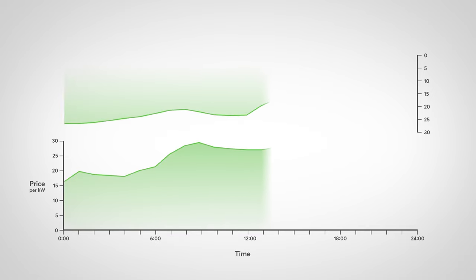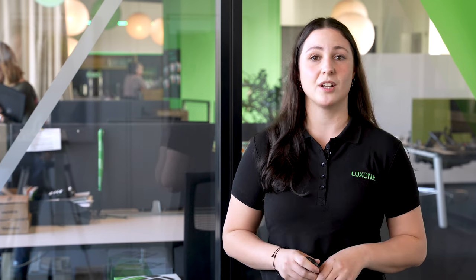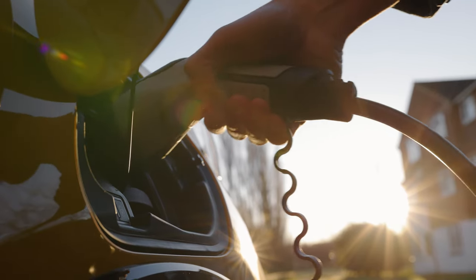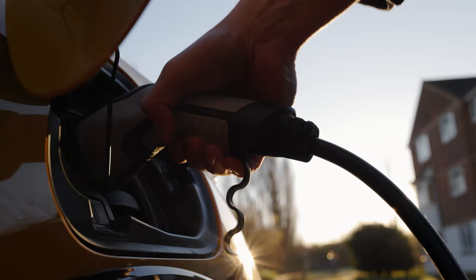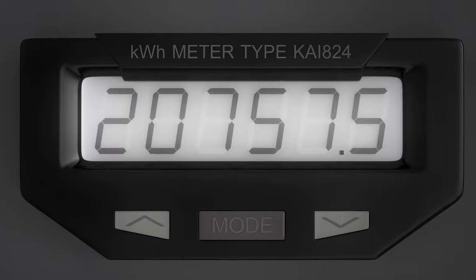But when are prices particularly low? With a variable tariff, the price is determined depending on the demand and need. If the electricity supply is higher than the demand, the price could technically even go negative. But who actually benefits from dynamic electricity prices? In a nutshell, everyone who is flexible enough to use energy when it's cheapest. This way, electricity costs can be reduced massively.